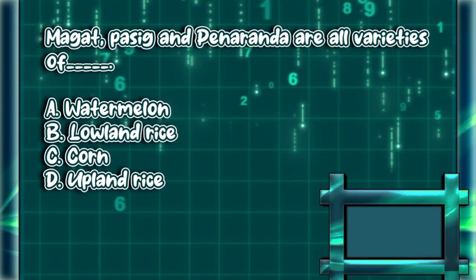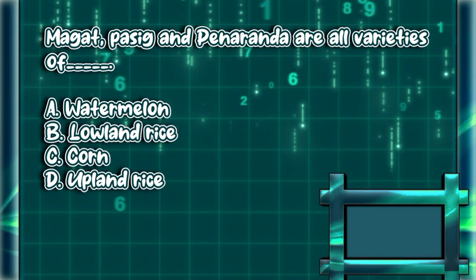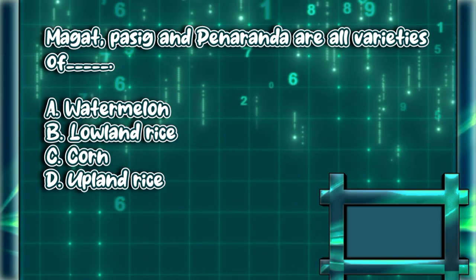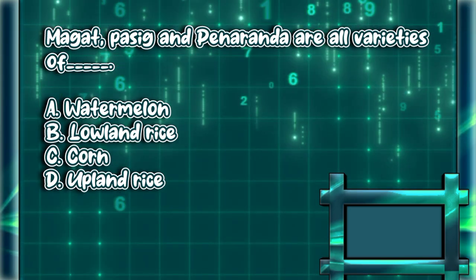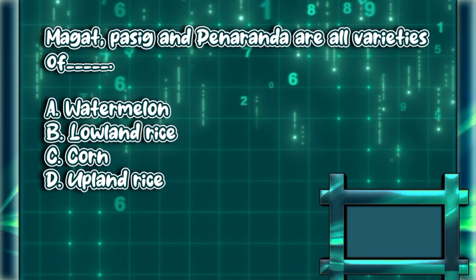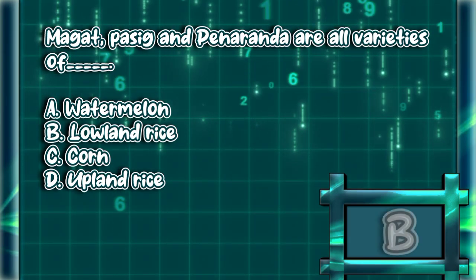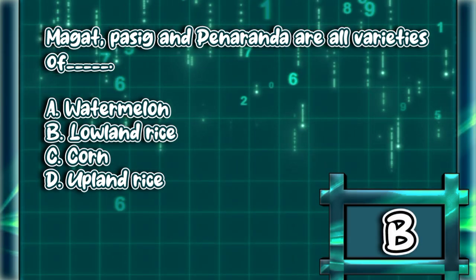Maggot, Pasig, and Peneronda are all varieties of. A. Watermelon. B. Lowland rice. C. Corn. D. Upland rice. The answer is letter B.